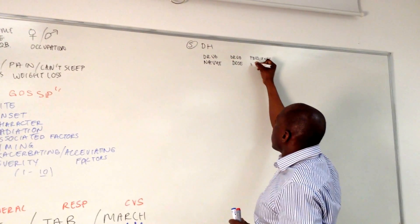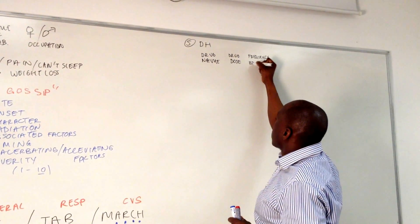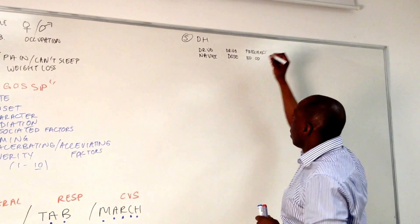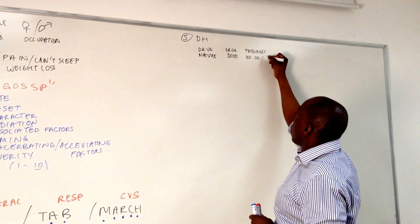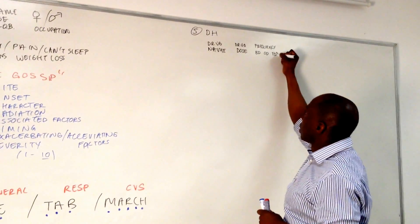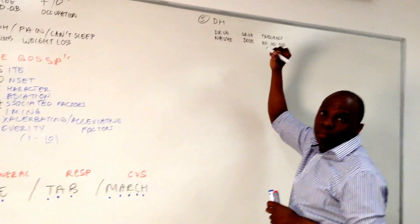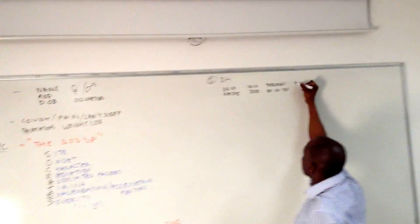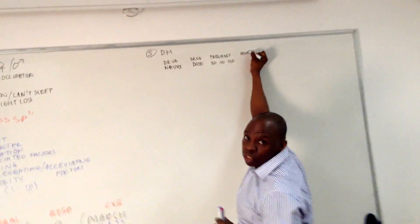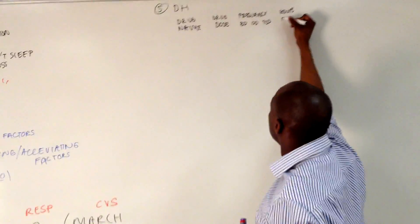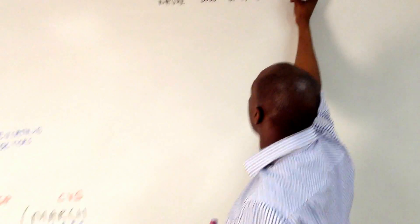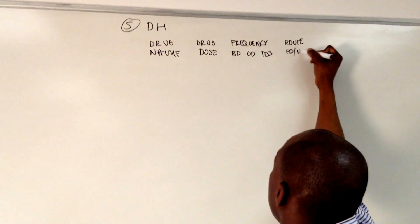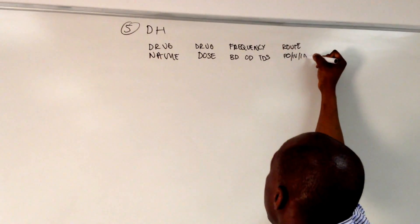Frequency is expressed as BD — twice a day, OD — once a day, or TDS — three times a day. Then you write the route: how it's going to be delivered into the person. Is it PO — per os, by mouth? Is it IV? Is it IM?